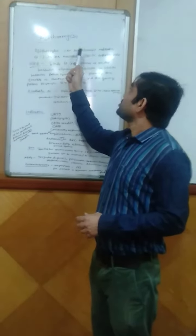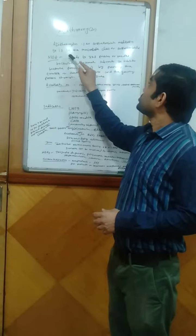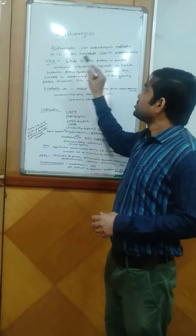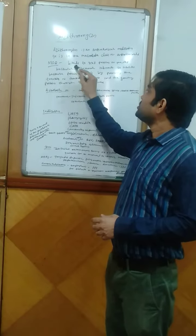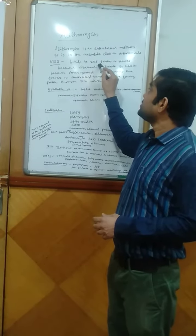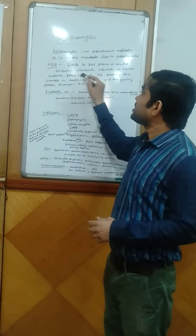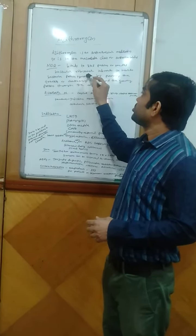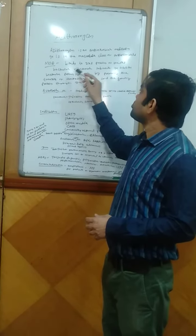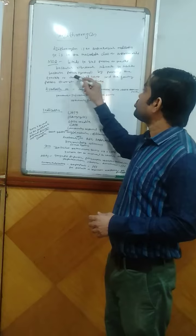Azithromycin has antimicrobial properties. It belongs to the macrolide group. Its mechanism of action involves binding to the 50S subunit of the bacterial ribosome, where it binds to the 23S ribosomal protein and inhibits protein synthesis.